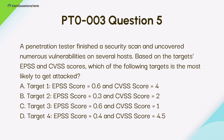A penetration tester finished a security scan and uncovered numerous vulnerabilities on several hosts. Based on the targets' EPSS and CVSS scores, which of the following targets is most likely to get attacked? A. Target 1: EPSS 0.6, CVSS 4. B. Target 2: EPSS 0.3, CVSS 2. C. Target 3: EPSS 0.6, CVSS 1. D. Target 4: EPSS 0.4, CVSS 4.5.